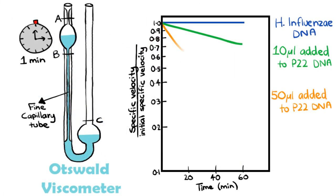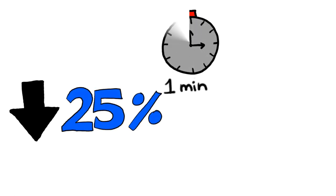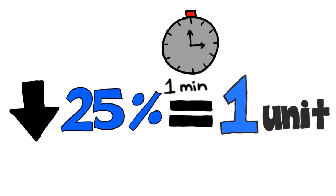As greater amounts of extract were added to P22 DNA, the viscosity decreased further. Smith concluded that a decrease in the DNA-specific viscosity of 25% in one minute is defined as one unit of enzyme activity.